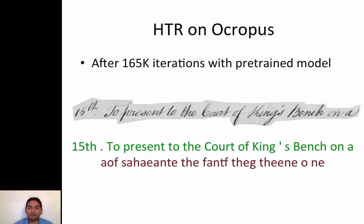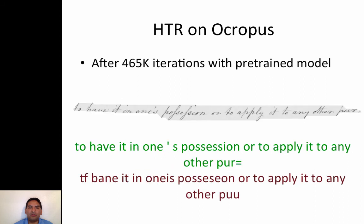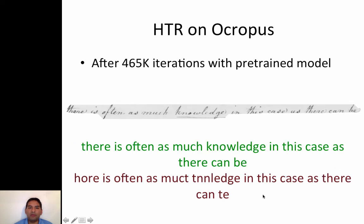Here's another example. If we increase the number of iterations to 465,000, the algorithm starts learning words it has seen frequently in the training set. It fails on words it hasn't seen frequently, such as 'knowledge,' but around other words you can see it starting to recognize them. Some images are hard to read even for humans, but the algorithm does a fairly good job.